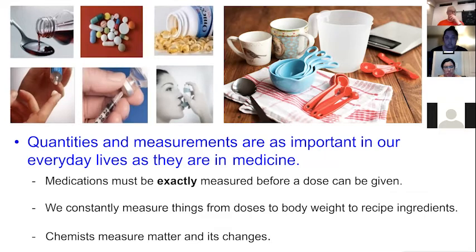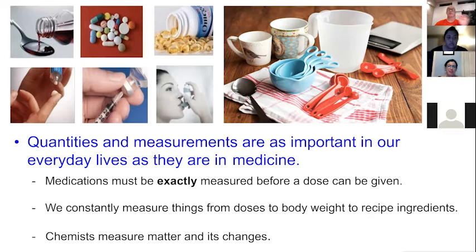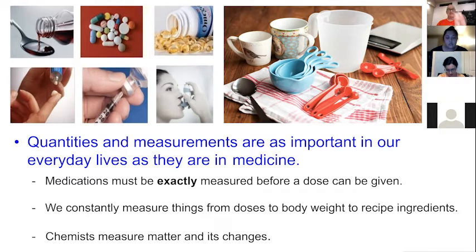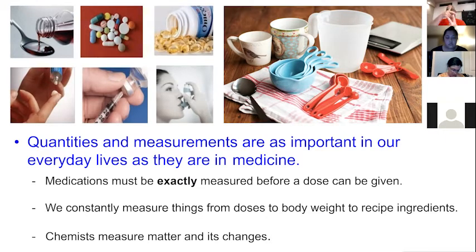Why are quantities and measurements so important? For those of you going into the medical field, that's pretty important. Medications have to be exactly measured. There's no such thing as an exact measurement, but we can get very precise. It's really important that not only do we measure something precisely and accurately, but when we've measured something and it's time to deliver a medication, we do a calculation based on the patient's body weight. We don't want to lose any precision because we've taken so much time to keep it.